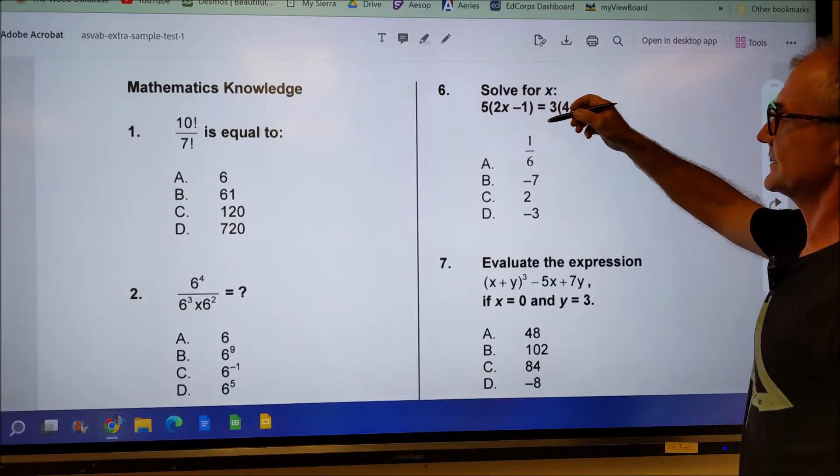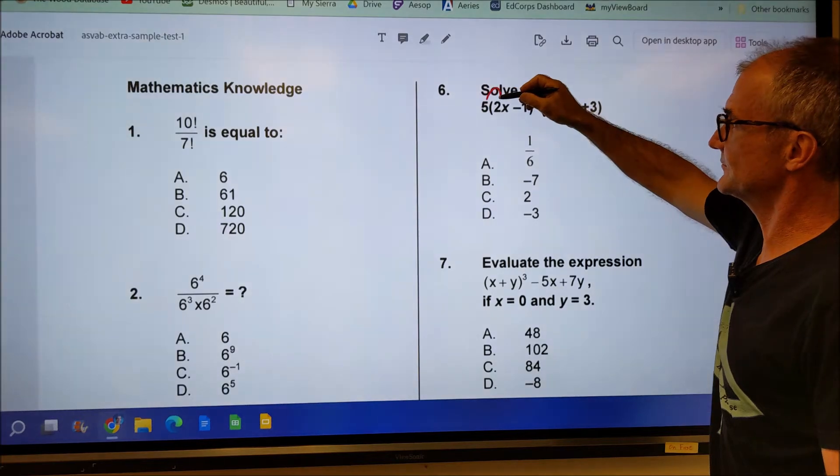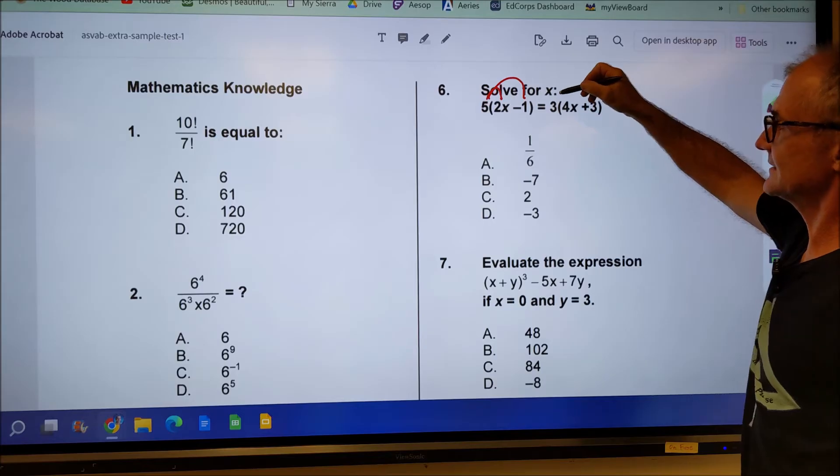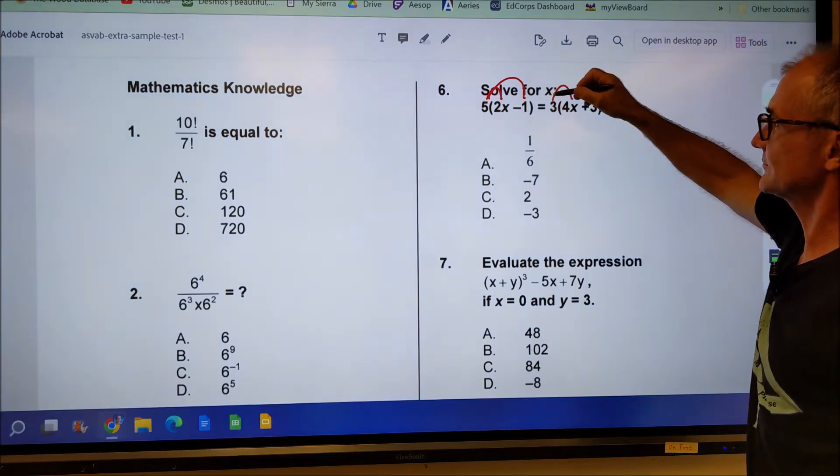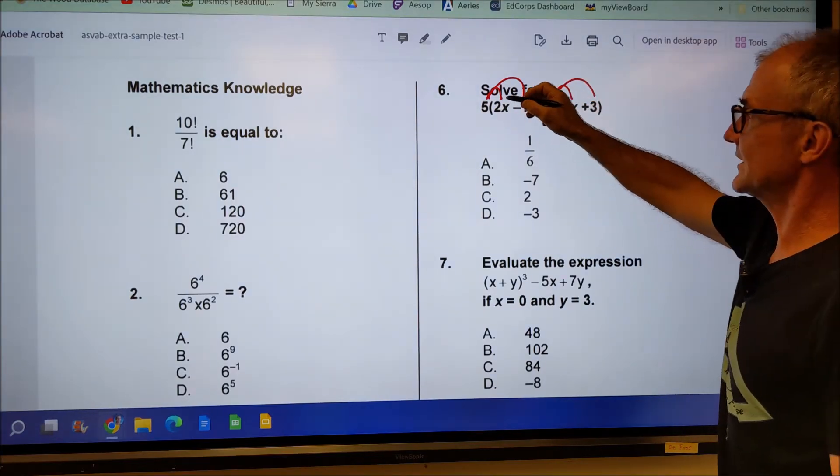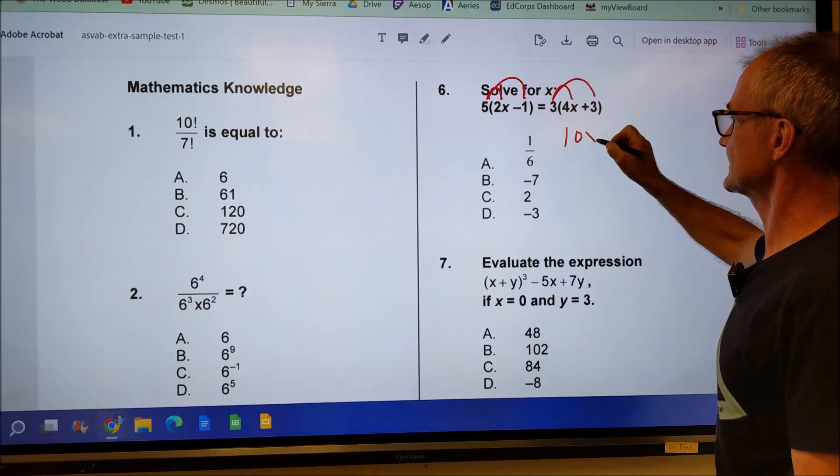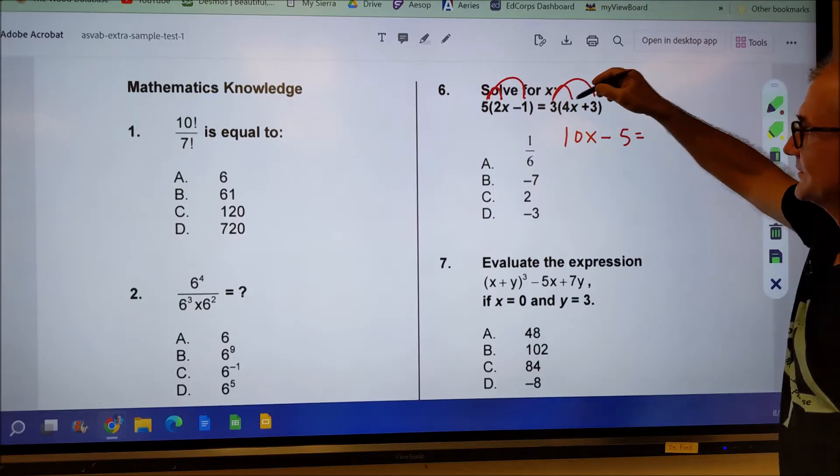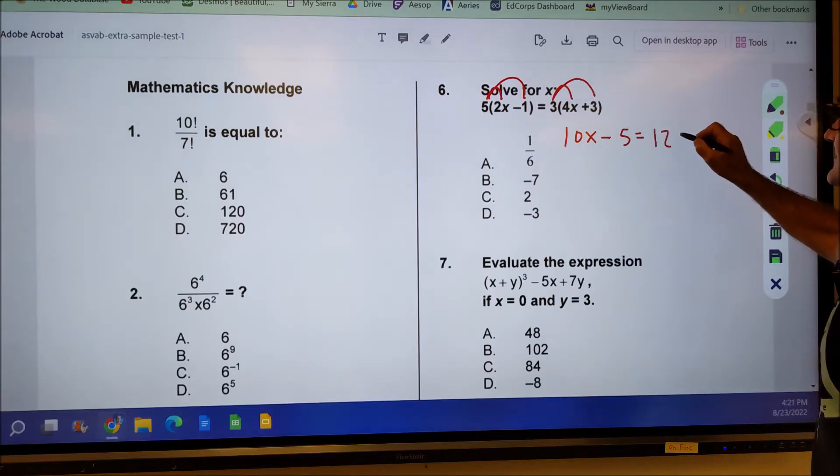Number six, solve for X. First thing you want to do is distribute the five through the quantity, both the 2X and the negative one, keeping track of that negative, and then distribute the three through the quantity. So that's going to give you 5 times 2X, 10X minus one times five minus five is equal to three times the four, 12X. And then three times the three is nine.